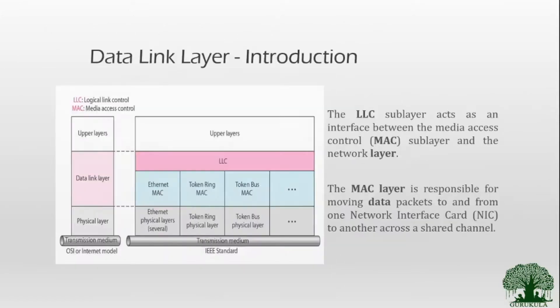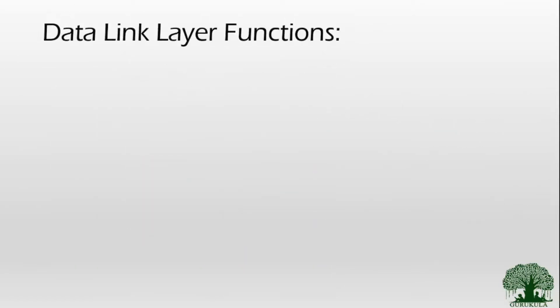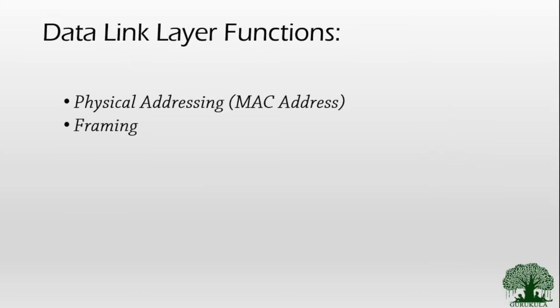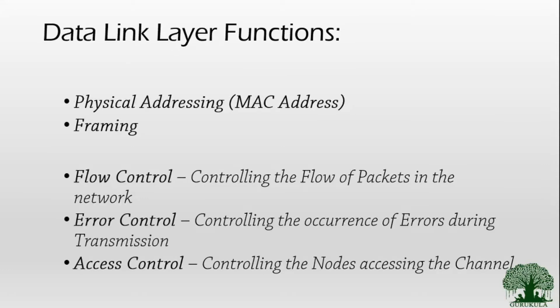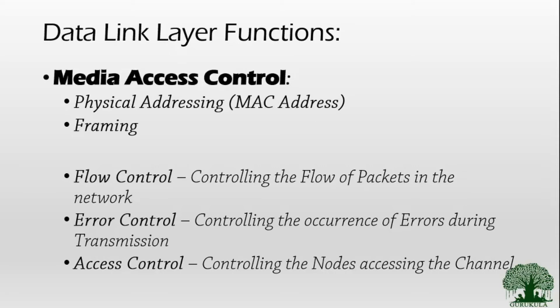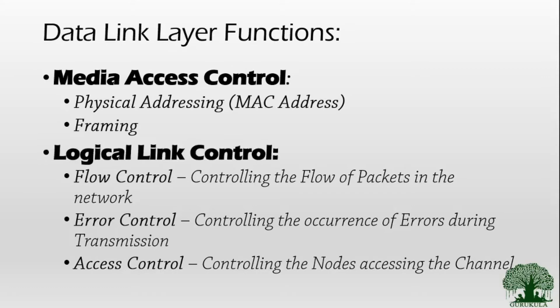The functions carried out by the data link layer are: physical addressing, framing, flow control, error control, and access control. Physical addressing and framing are handled by the MAC sub-layer, while flow control, error control, and access control are handled by the LLC sub-layer. Physical addressing is a permanent address for each node connected on the internet — we also call it the MAC address — and it is burnt onto the network interface card and cannot be changed.